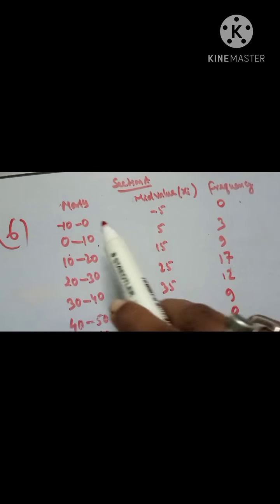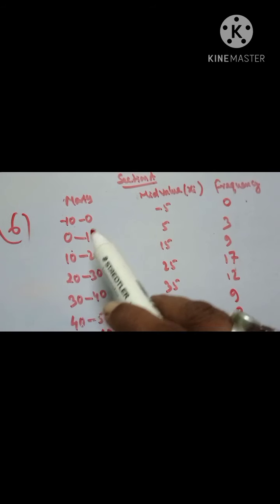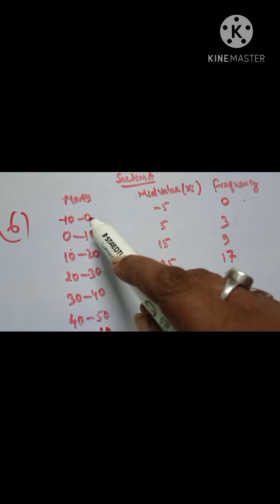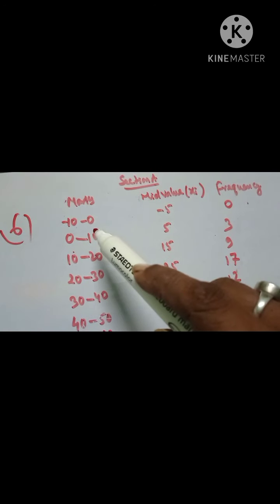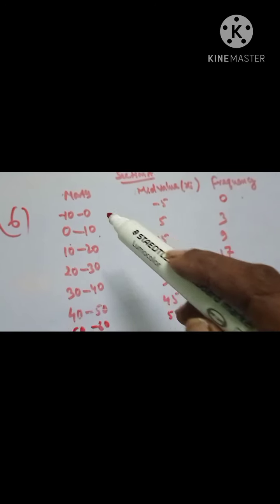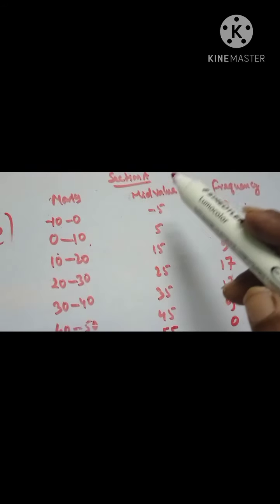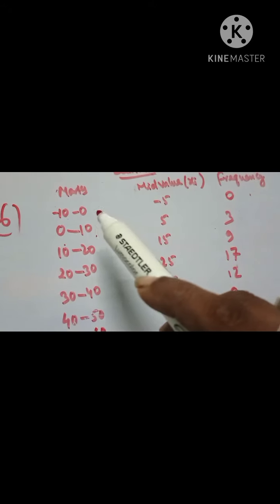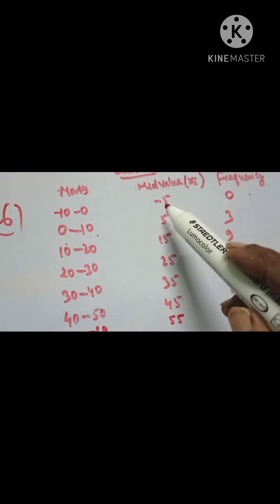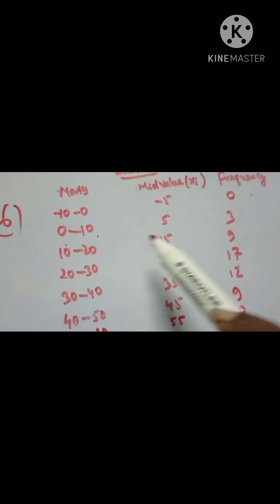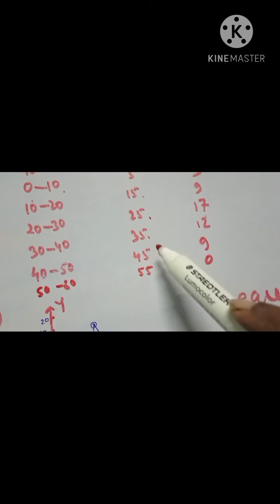Now I have to make the table. We need to take a class interval above 0 to 10, that is minus 10 to 0, keeping the class size the same. We also take another class interval greater than 40 to 50, that is 50 to 60. The mid value is calculated as upper limit plus lower limit divided by 2, which gives minus 5, then 5, 15, 25, 35, 45, and 55.